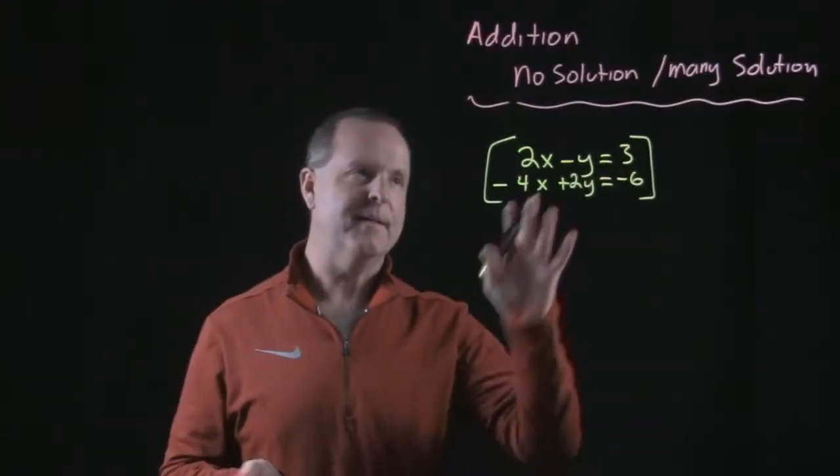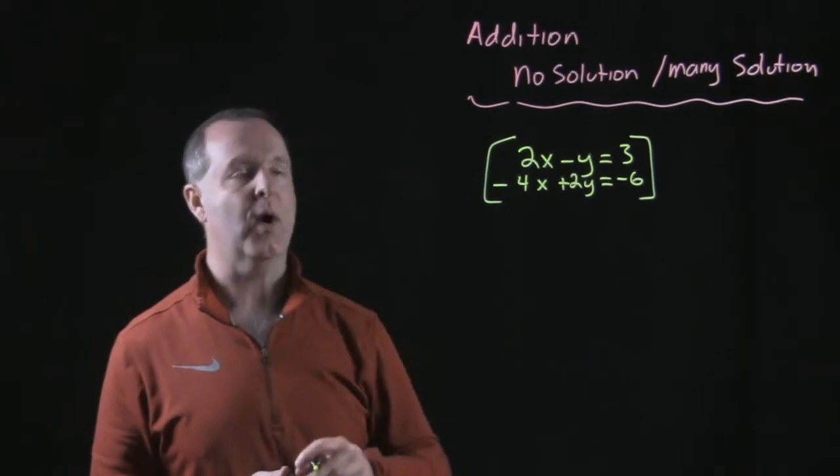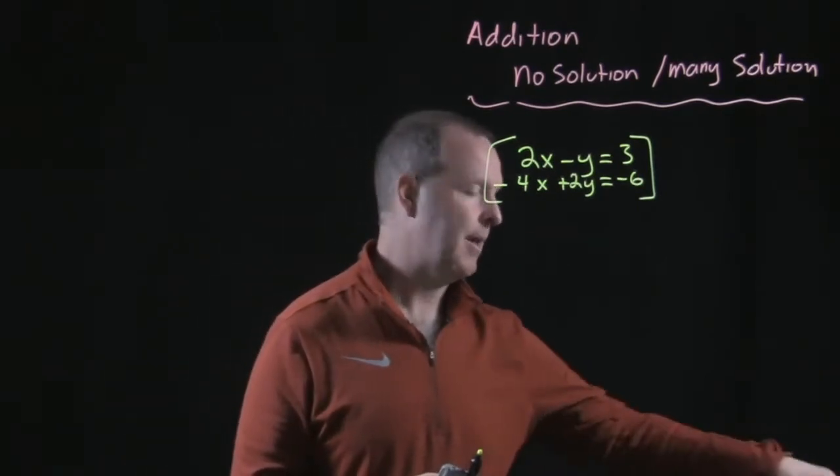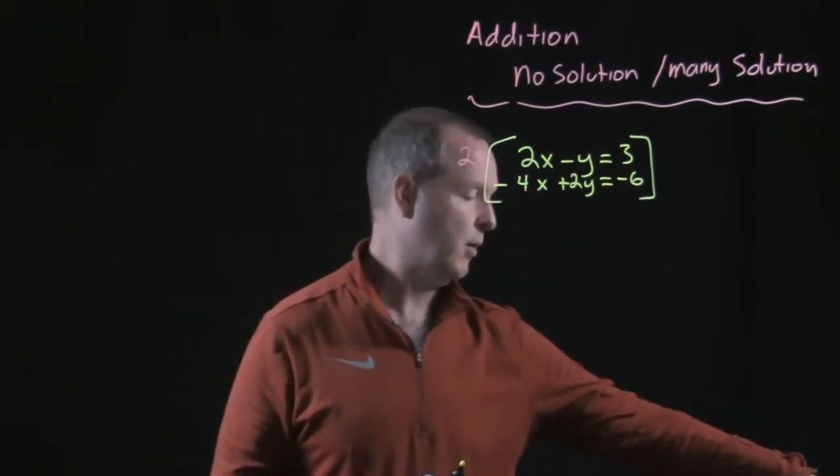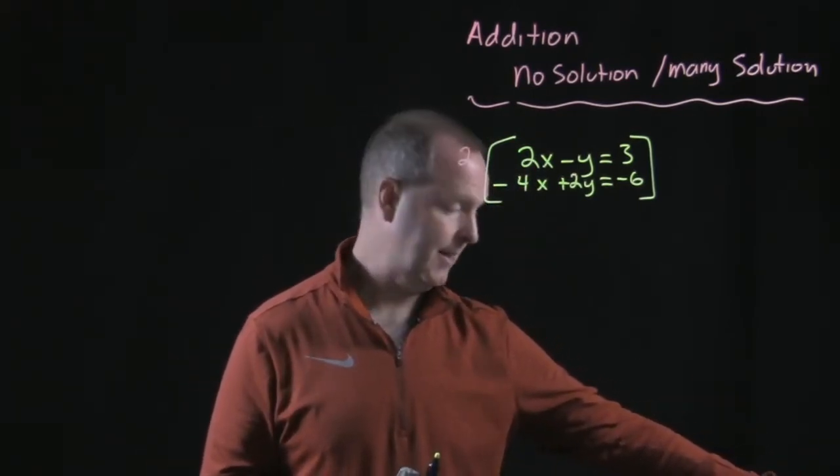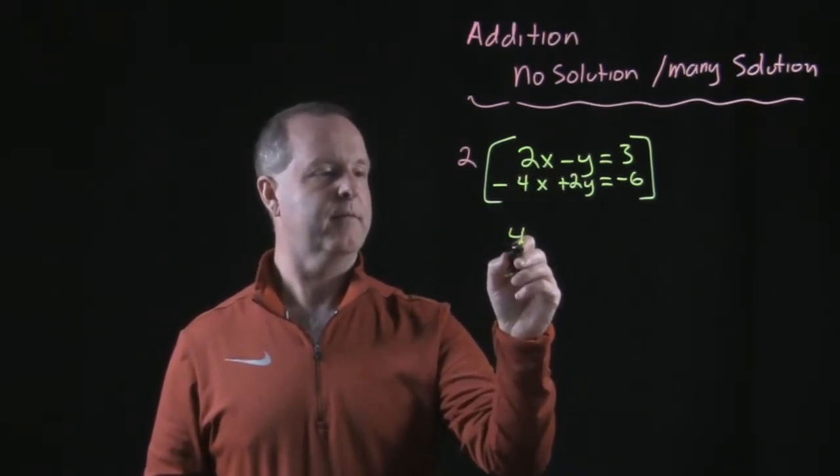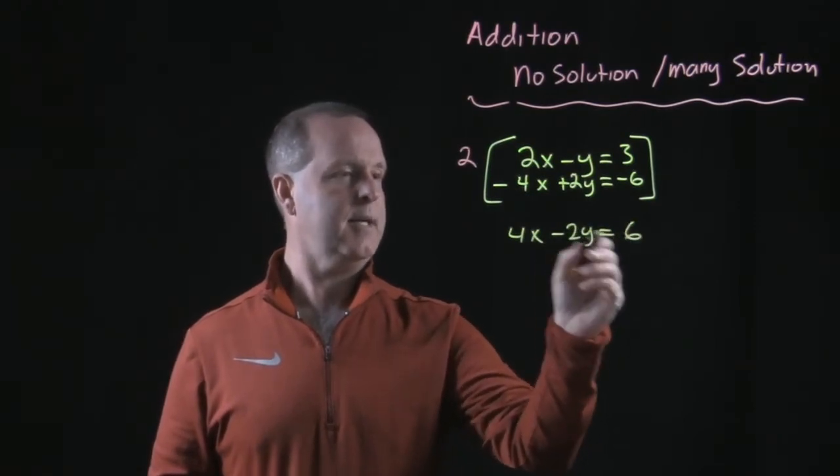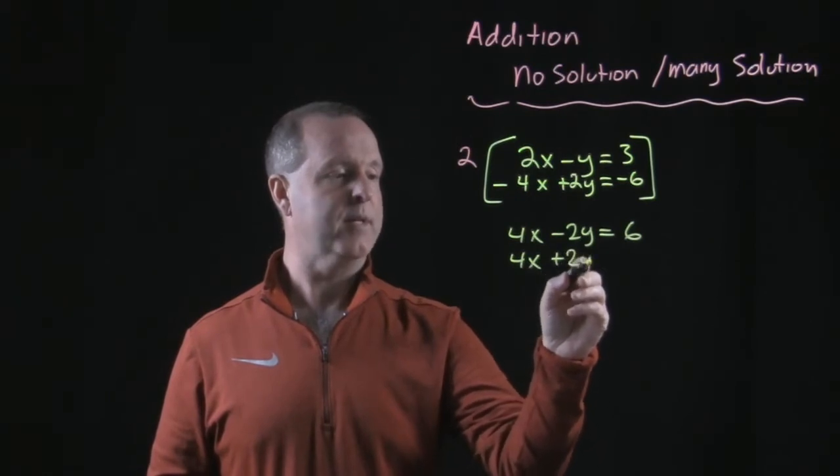And what happens if we get many solutions? How would that look as we try to eliminate a variable with the addition method? So let's multiply or scale the top one by a factor of 2, which means that I multiply the left and right side by 2. So 2 times 2x becomes a 4x minus a 2y equals a 6. The second equation is 4x minus 2y. That one's unchanged.